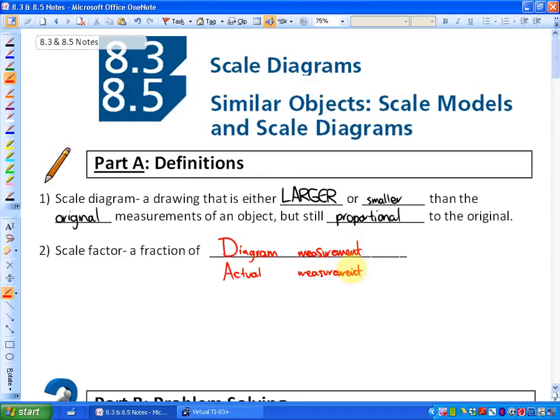So as an example, if the diagram is smaller than the actual, what we'd have here would be a diagram number that's smaller than the actual number, which would be a proper fraction. Or in other words, if you have a scale factor that is less than 1, then what that means is that the diagram is smaller than the actual.